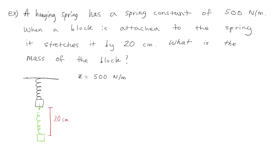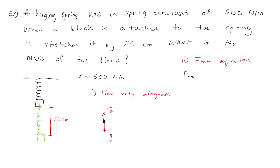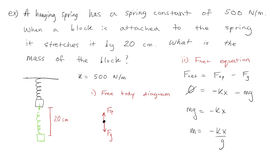We want to know what is the mass of the block. The first thing I like to do is draw a free body diagram, which represents the object after it's been stretched. We would have the force of gravity pushing down on it, and we would have the spring force, which wants to pull back up on it. Next we will make our F net equation, which would be the spring force minus the force of gravity. F net can be replaced with zero because the block is not moving after it's been stretched. And we can replace the force of the spring with negative kx and the force of gravity with mg, then rearrange the equation and isolate for the mass m.